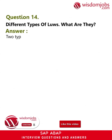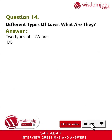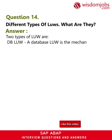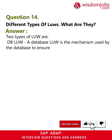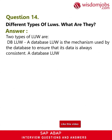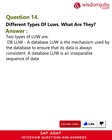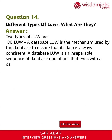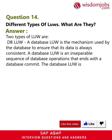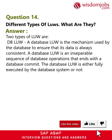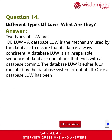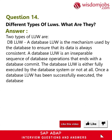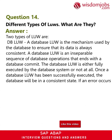Question 14: What are the different types of LUW? Answer: There are two types. DB LUW (Database Logical Unit of Work): A database LUW is the mechanism used by the database to ensure that its data is always consistent. It is an inseparable sequence of database operations that ends with a database commit. The database LUW is either fully executed by the database system or not at all.